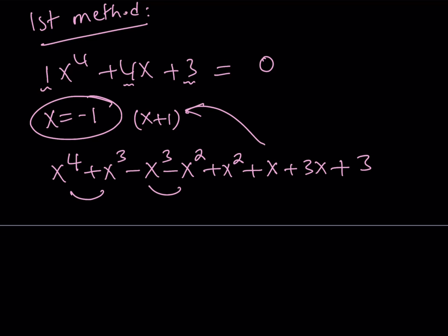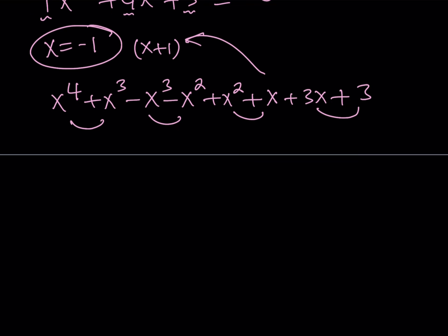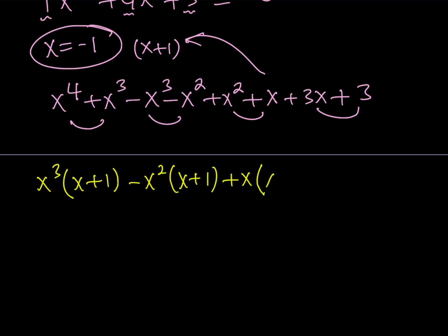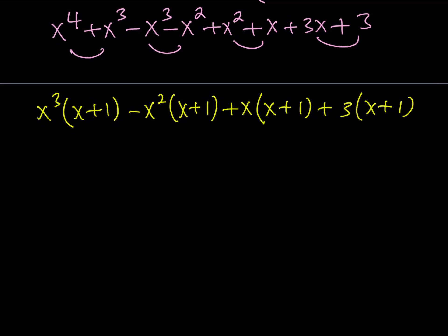Now I'm going to be factoring by grouping. If you factor here, you get x cubed times x plus one, minus x squared times x plus one — this kind of verifies what we did — then x times x plus one, and finally three times x plus one. So knowing that x equals negative one is a solution helps us a great deal in terms of factoring. Now I can write this as x plus one times the quantity x cubed minus x squared plus x plus three.